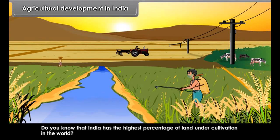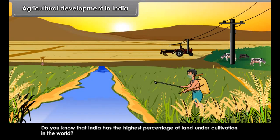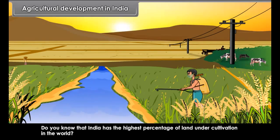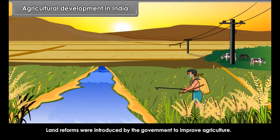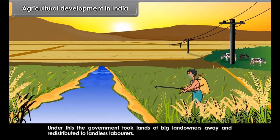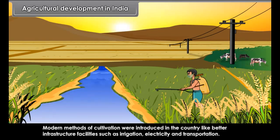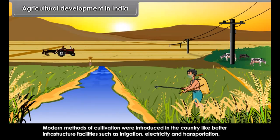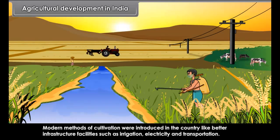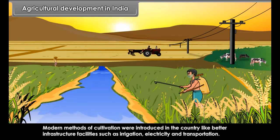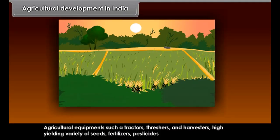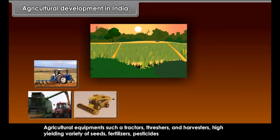India has the highest percentage of land under cultivation in the world. Land reforms were introduced by the government to improve agriculture — the government took lands of big landowners and redistributed them to landless laborers. Modern methods of cultivation were introduced, including better infrastructure facilities such as irrigation, electricity and transportation.